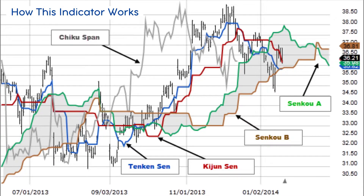When Senku A is rising and above Senku B, the uptrend is strengthening. When Senku A is falling and below Senku B, the downtrend is strengthening. A buy signal is reinforced when the Tenkan Sen crosses above the Kishu Sen, while the Tenkan Sen, Kishu Sen, and price are all above the cloud. A sell signal is reinforced when the Tenkan Sen crosses below the Kishu Sen, while the Tenkan Sen, Kishu Sen, and price are all below the cloud.